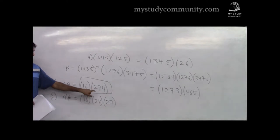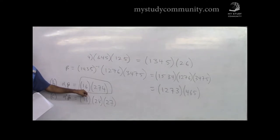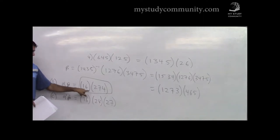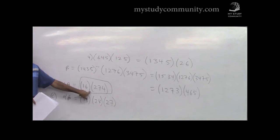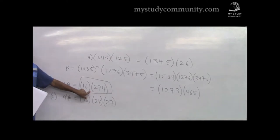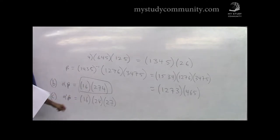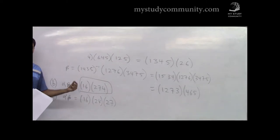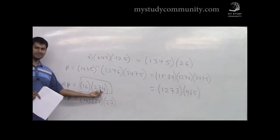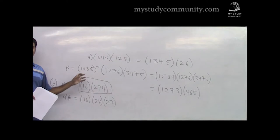There are other ways to think about it. For example, using the theorem: if the length of the cycle is even, then it's an odd permutation; if the length of the cycle is odd, then it's an even permutation. So (1 6) has length 2, which is even, so it's an odd permutation. And the other cycle is even. Odd multiplied by even — thinking of addition — gives odd. So overall this is an odd permutation.